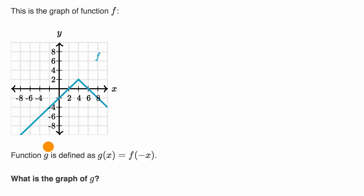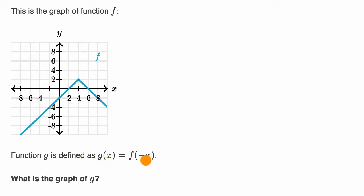What we're going to do in this video is do some practice examples of exercises on Khan Academy that deal with reflections of functions. So this first one says this is the graph of function f. Function g is defined as g of x is equal to f of negative x. What is the graph of g?